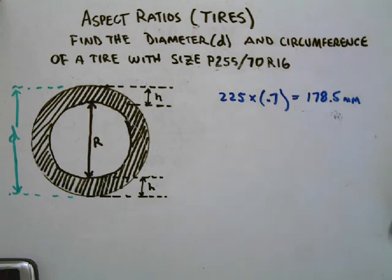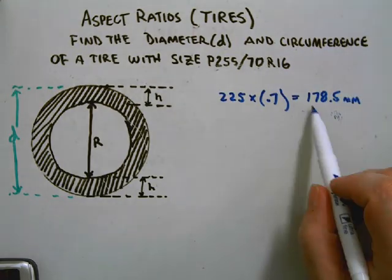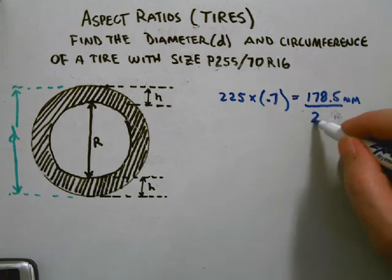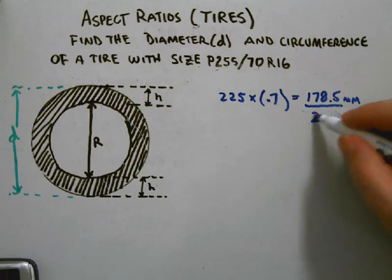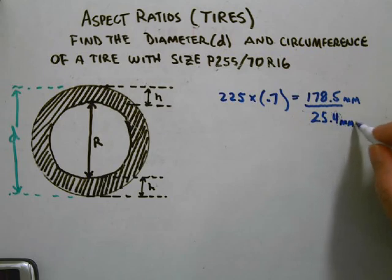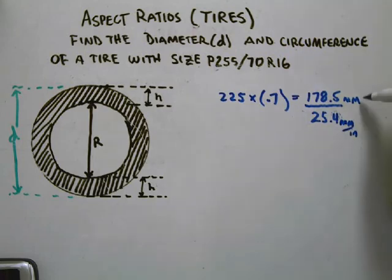Now, in order to convert it, we're going to use our standard conversion—we're going to use this number every time: 25.4, and that's millimeters per inch. When you flip it, millimeters cross out and you're left with inches as your answer. That turns out to be about 7.03 inches.